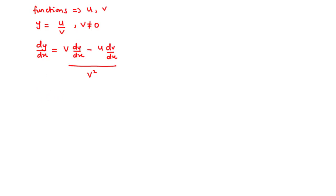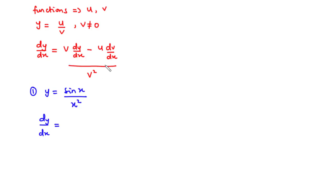Now let's take an example. Given the function y equals sin(x) divided by x squared, how do we find the derivative of this function with respect to x? Let u be equal to sin(x) and v be equal to x squared. u is the numerator and v is the denominator.